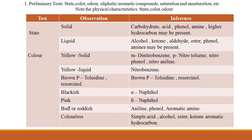The first test is the preliminary test, which includes state, color, odor, aromaticity, and saturation/unsaturation. Physical characteristics — state, color, odor: if the state is solid, it may be a carbohydrate, some acids (e.g., benzoic acid, phthalic acid), some phenols (e.g., alpha-naphthol, beta-naphthol), some amines, or higher hydrocarbons. If the compound is liquid, it may be alcohol, ketone, aldehyde, ester, phenol, or amines.